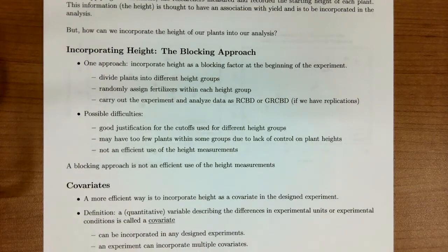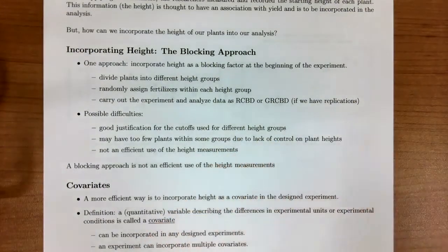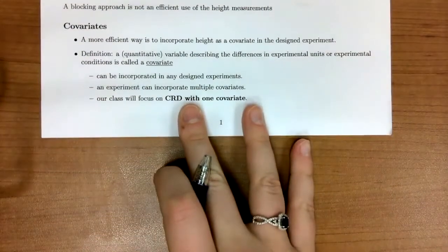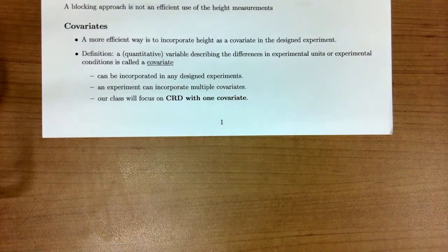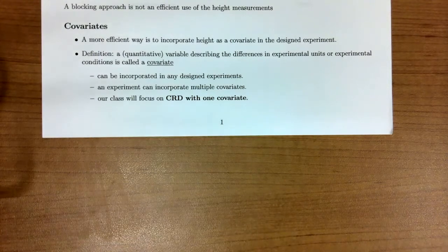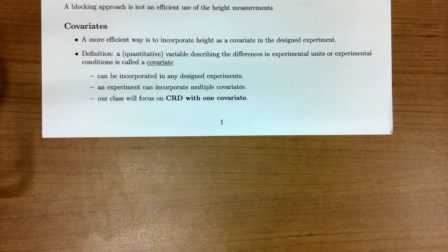We wouldn't want to take this RCBD design approach with our height measurements. A better and more efficient way to incorporate height into the model is as a covariate. A covariate is a quantitative variable that describes the difference in the experimental units or experimental conditions. It can be incorporated in any design of experiments, and experiments can have multiple covariates. In our class, we're going to focus on a completely randomized design with only one covariate.